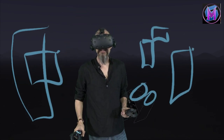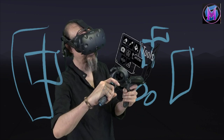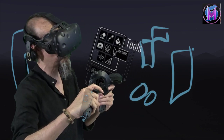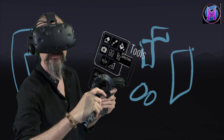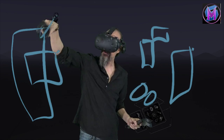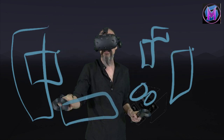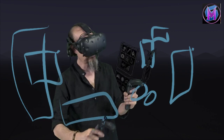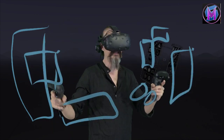Hey there, we are teaching Tilt Brush, and this lesson is about the Selection Tool. The Selection Tool is one of the more powerful and complicated tools in Tilt Brush, so we're going to take some time to really see how it works. I've already been drawing some pieces — some nice lines and shapes — so we have some examples to work with, and we're going to see how the Selection Tool affects what we've painted.